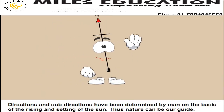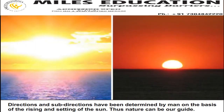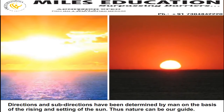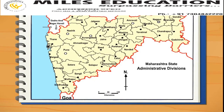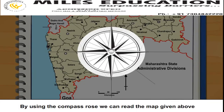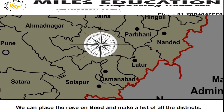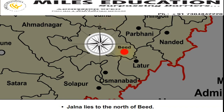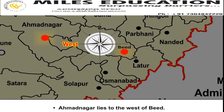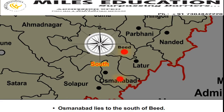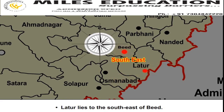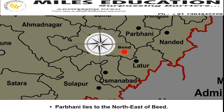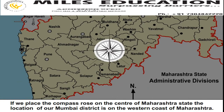Directions and sub-directions have been determined by man on the basis of the rising and setting of the sun. Thus, nature can be our guide. Make Friends with Maps. By using the compass rose, we can read the map given above. We can place the rose on Beed and make a list of all the districts. Jalna lies to the north of Beed. Ahmednagar lies to the west of Beed. Osmanabad lies to the south of Beed. Latur lies to the south-east of Beed. Aurangabad lies to the north-west of Beed. Parbhani lies to the north-east of Beed. If we place the compass rose on the centre of Maharashtra state, the location of Mumbai district is on the western coast.